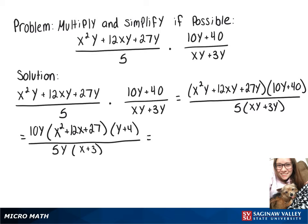Now I'm going to rewrite that 10y as 5y times 2. Then we have a quadratic there that we can factor, and that'll turn into x plus 3 times x plus 9. And we've still got our y plus 4.